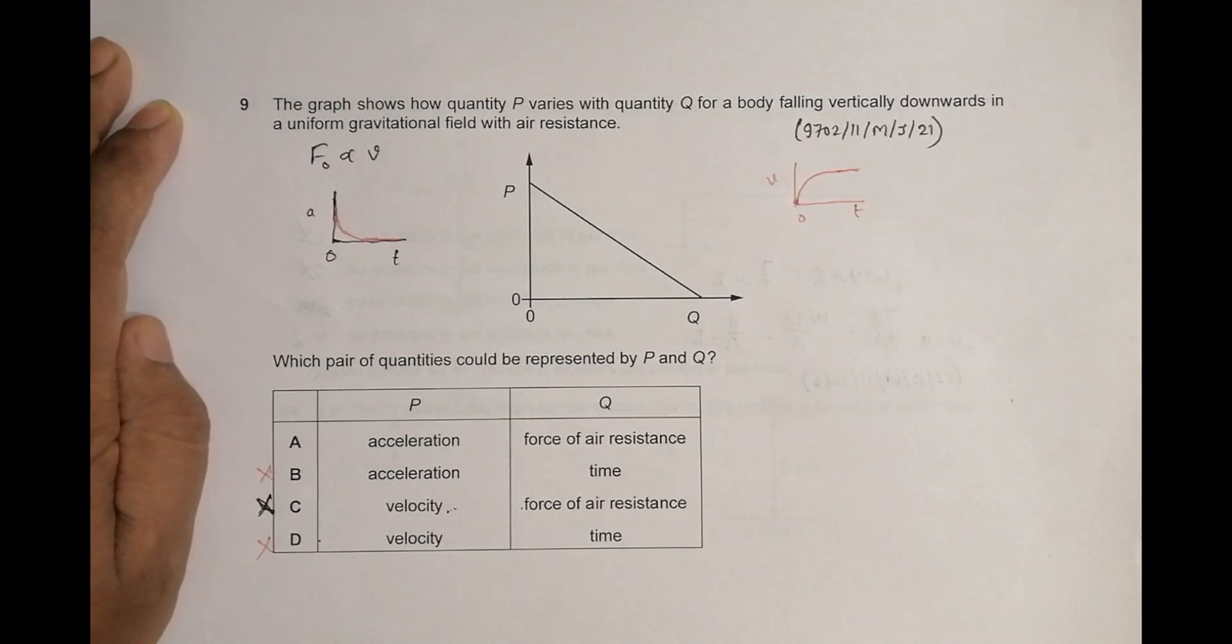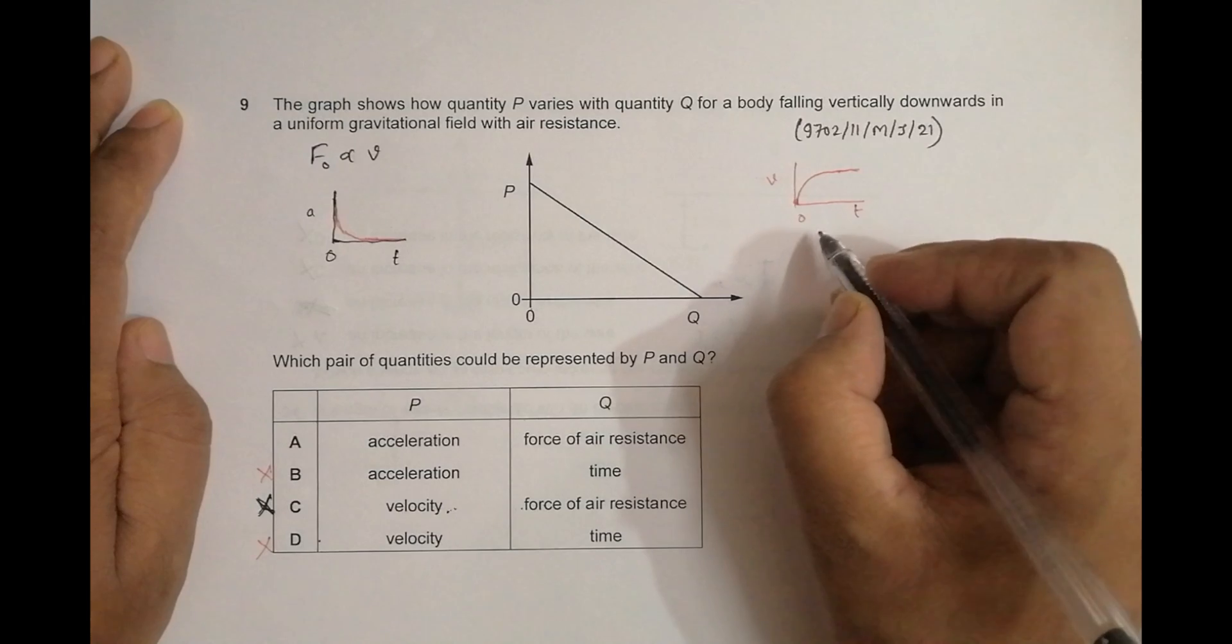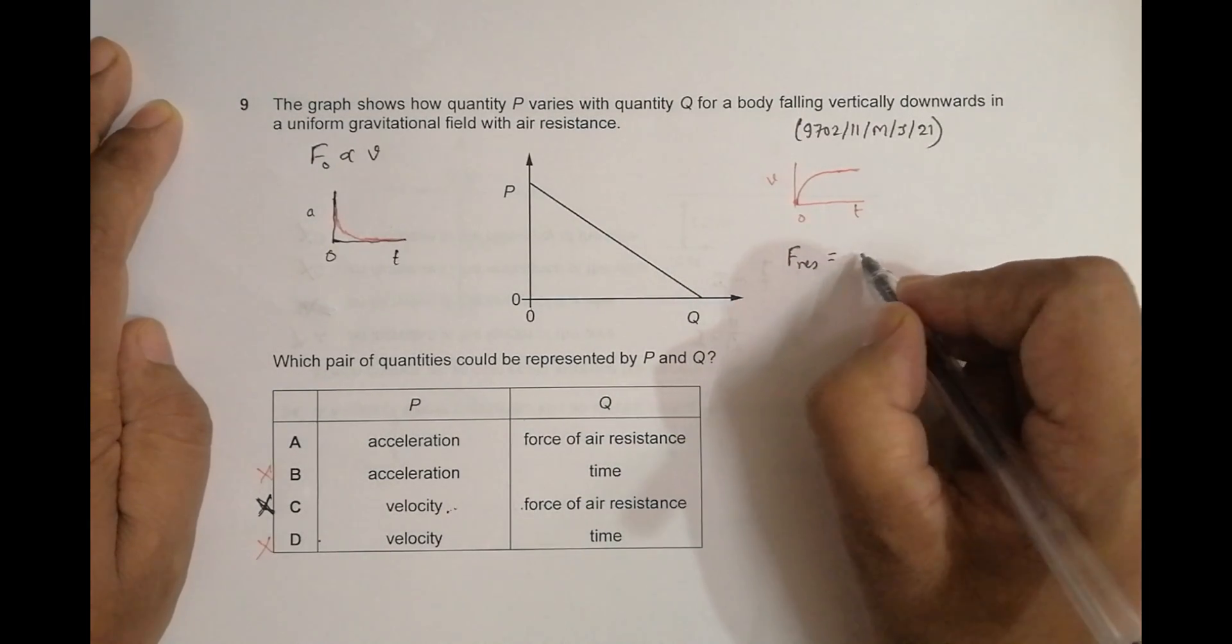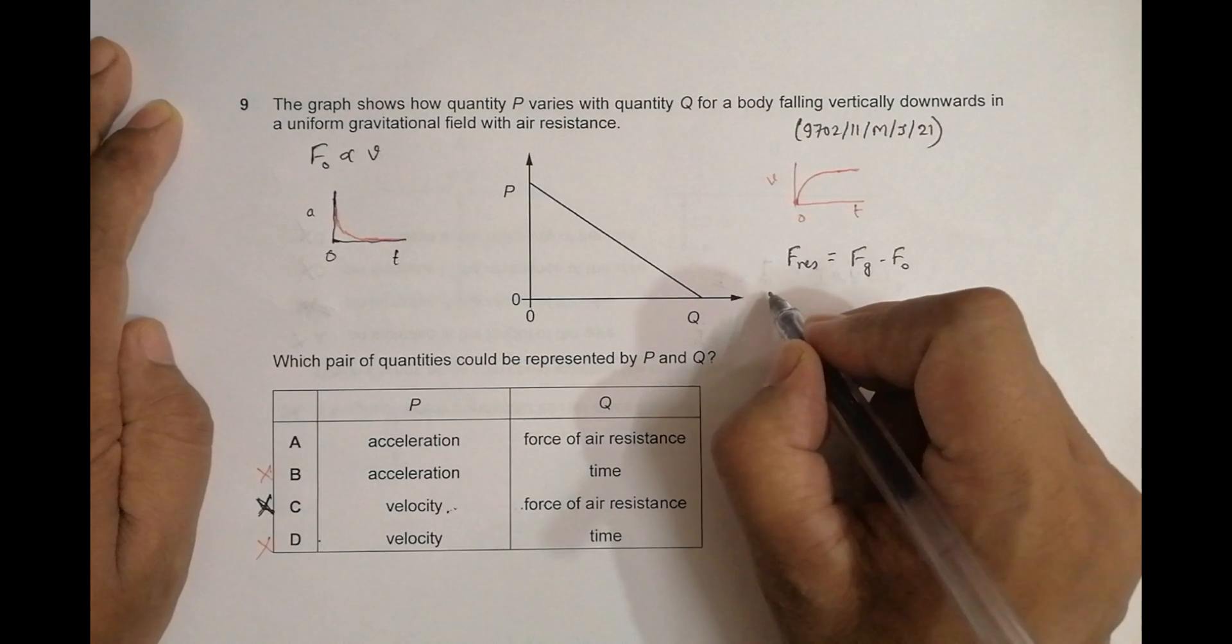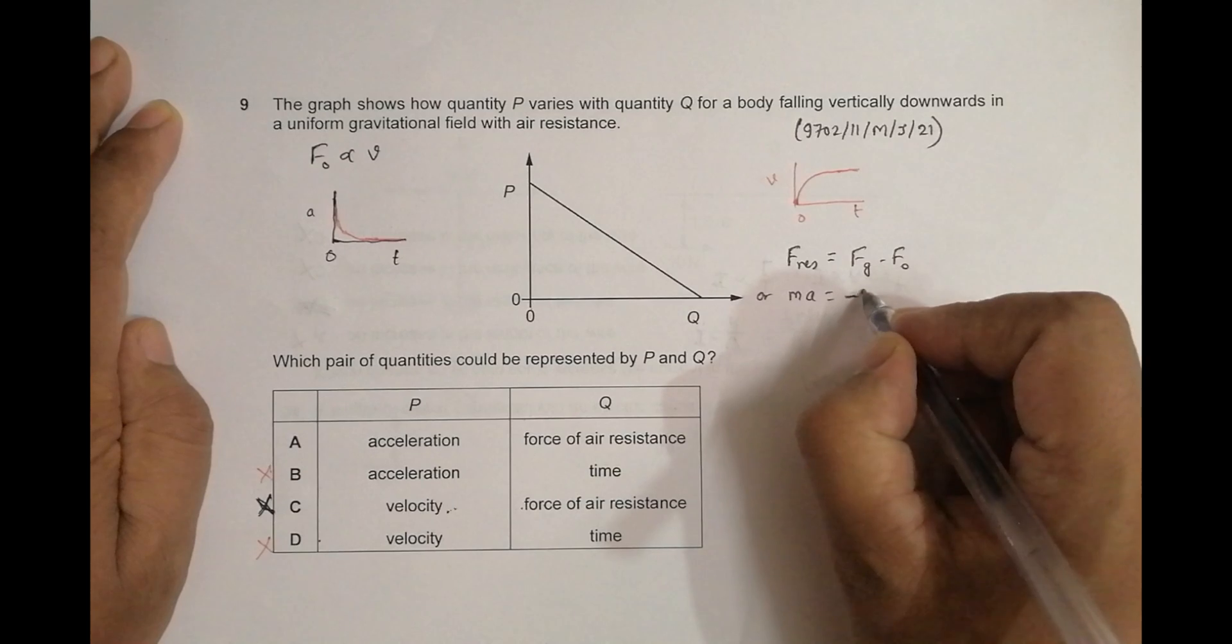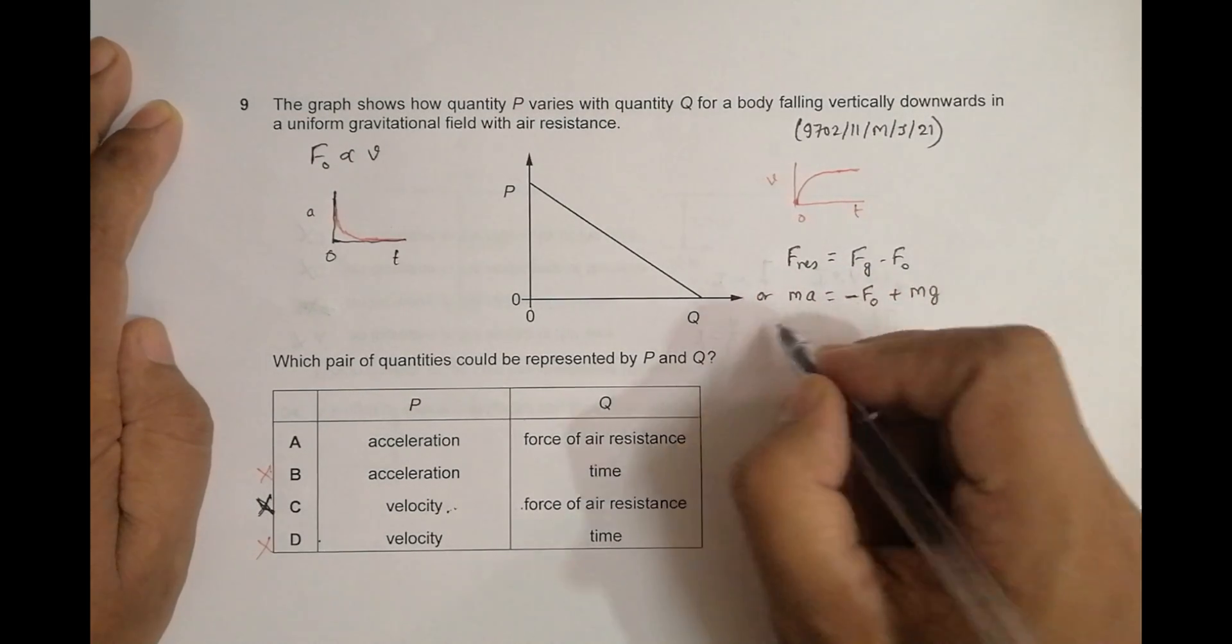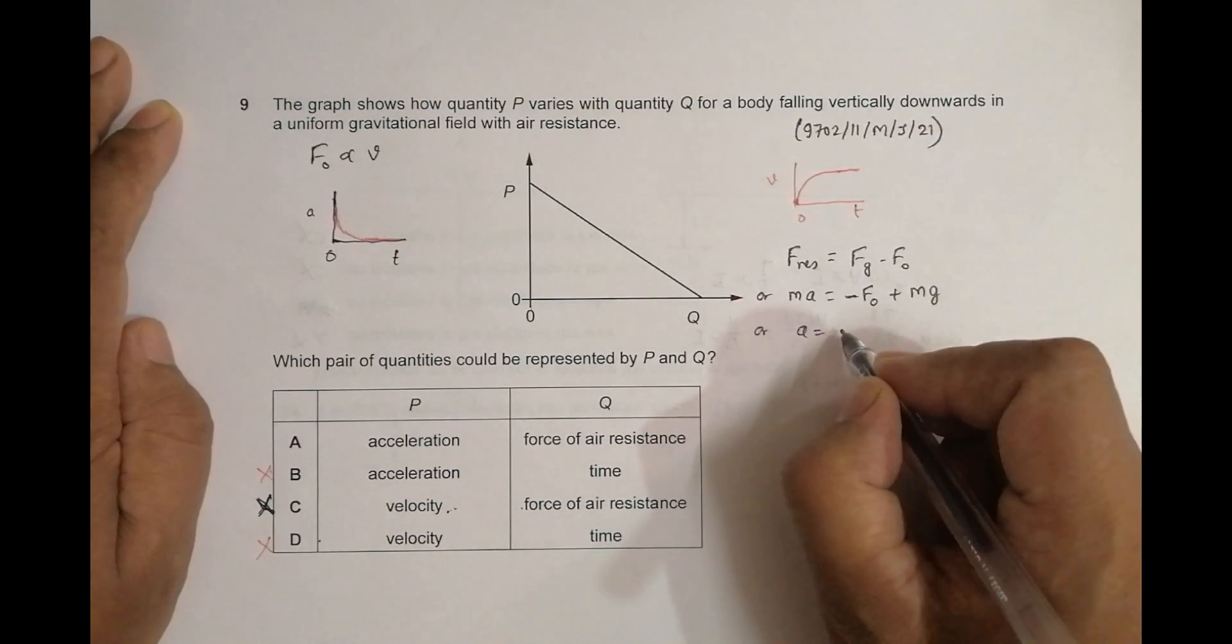Now the only choice is acceleration and force of air resistance. The resultant force on the body is force of gravity minus force of air resistance. So ma = mg - fo, or a = -fo/m + g.